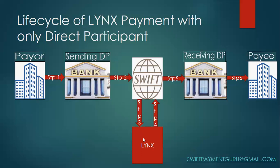The sending direct participant has a master account — also called a settlement account — at LYNX, which is controlled by the Bank of Canada. On receiving the message via SWIFT, LYNX first debits the sending direct participant's settlement account with the transfer amount, then sends a debit advice back to the sending direct participant confirming the debit. It then credits the master account of the receiving direct participant, also held at LYNX, and sends out a credit advice to that receiving direct participant.